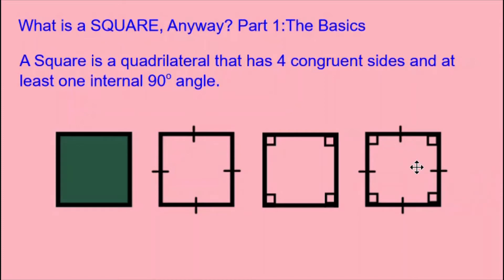I can draw my square like this, where we see the four little squares in the corners that signify those are 90-degree angles, and we see the little lines that show the four sides are congruent. These are some of the basic facts about the square.